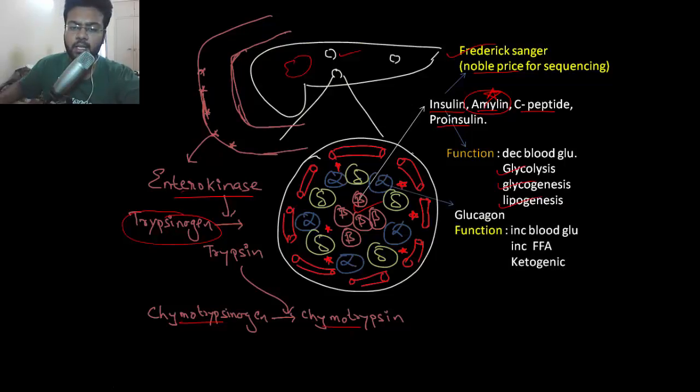Next is alpha cell which releases glucagon whose function is to increase blood glucose, increase free fatty acids in blood and it's ketogenic mind well.